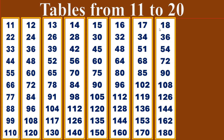18 times table. 18 ones are 18. 18 twos are 36. 18 threes are 54. 18 fours are 72. 18 fives are 90.